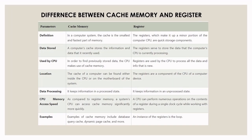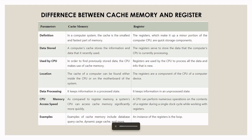Hi, myself Pius. Today I am going to explain the difference between cache memory and register. Definition of cache memory: in a computer system, cache is the smallest and fastest part of memory. Definition of register: registers make up a minor portion of the computer CPU and are quick storage components. Data stored in cache memory: a computer cache stores the information and data that is recently used. Data stored in register: the register is used to store data that the computer CPU is currently processing.